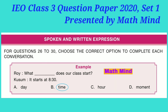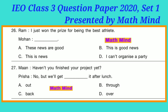Spoken and Written Expression. For questions 26 to 30, choose the correct option to complete each conversation. Example — Roy: 'What does our class start?' Answer: 'It starts at 8:30.' Correct answer B: 'What time does our class start?' Question 26: Ram: 'I just won the prize for being the best athlete.' Mohan: dash. Option B is correct: 'This is good news.' Question 27: 'Have you not finished your project yet?' Prisha: 'No, but I will get dash it after lunch.' Option B is correct: 'get through' — this is a phrasal verb.